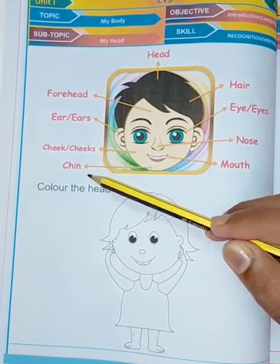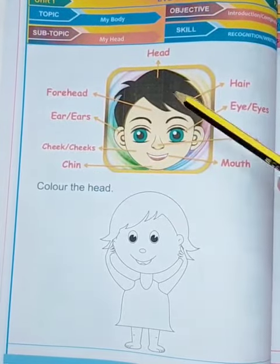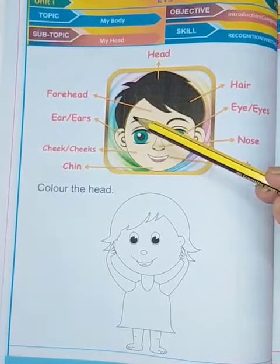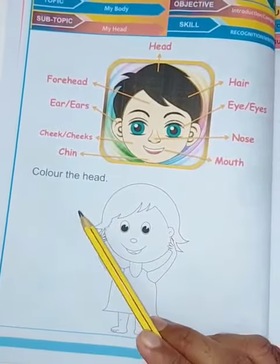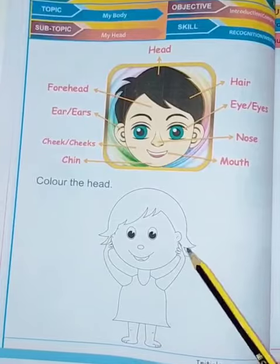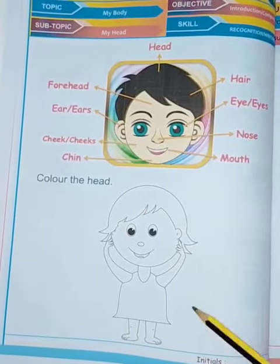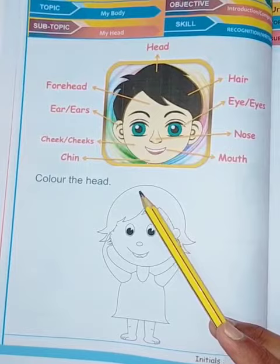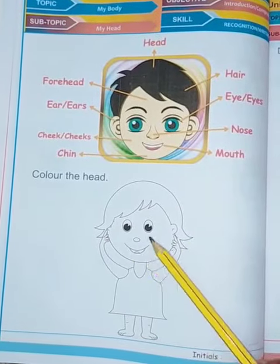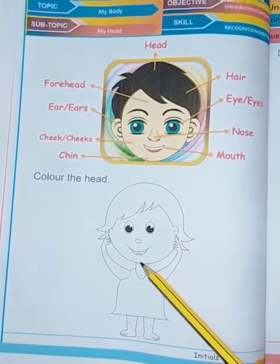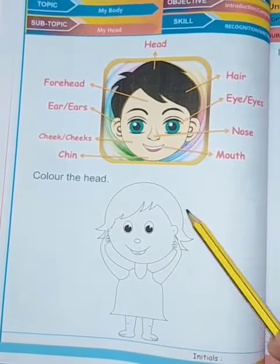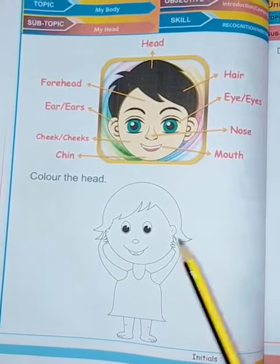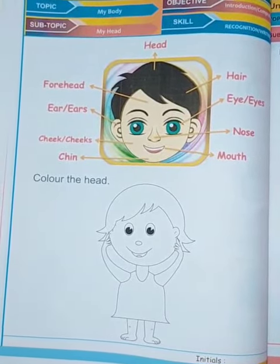Cheeks and chin — these are the parts of the head. Now, color the head. This is the image you have to color — only the part of the head, not the remaining body. Do not color the rest of the body.